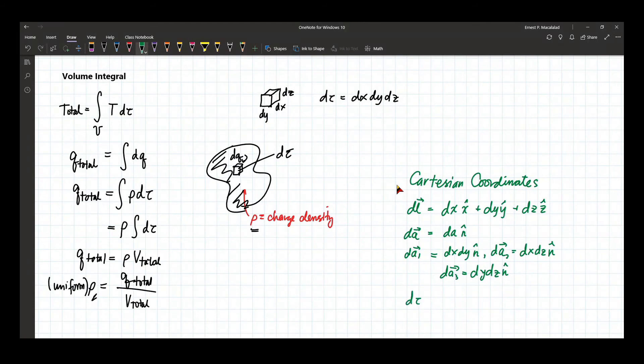And lastly, dTau, as I mentioned earlier, is just a product of dx, dy, and dz. So you'll notice here that dL and dA are vector quantities, while dTau is a scalar quantity.